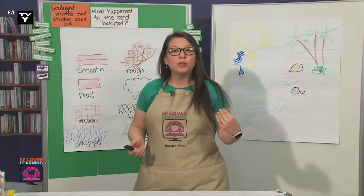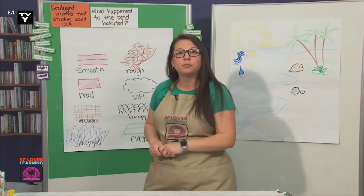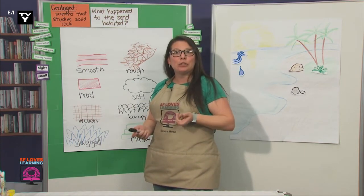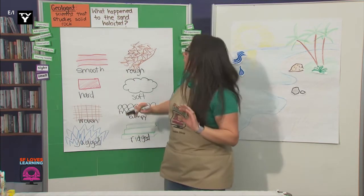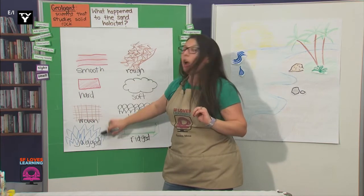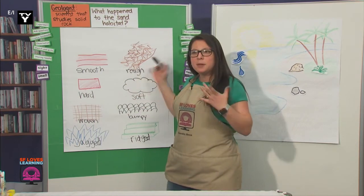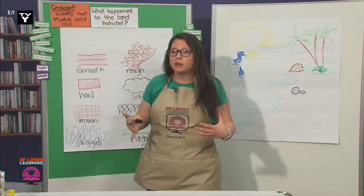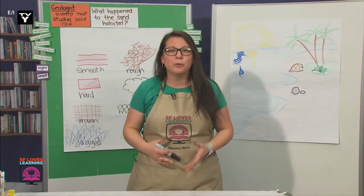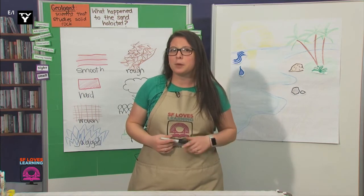What textures would you use to describe rocks that we see by the beach? They could be smooth, they could be jagged, hard, and sometimes rough, too. This makes me think — for our model, we should be sure to observe different textures. That might help us see things a bit better.